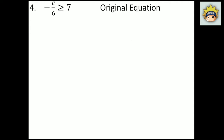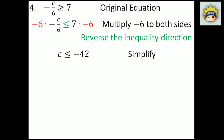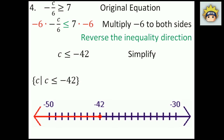Number 4. The original equation is negative c over 6 is greater than or equal to 7. The inverse property of negative divided by 6 is to multiply by negative 6. Multiply that to both sides. When multiplying by a negative value, we flip the direction of the inequality — so greater than or equal to becomes less than or equal to. What I have left on the left-hand side is c. On the right-hand side, 7 times negative 6 is negative 42. So c is less than or equal to negative 42. In set builder notation: c has to take any value less than or equal to negative 42. It is closed at negative 42 going all the way to the left — so negative 43, negative 44 and so forth would be valid.